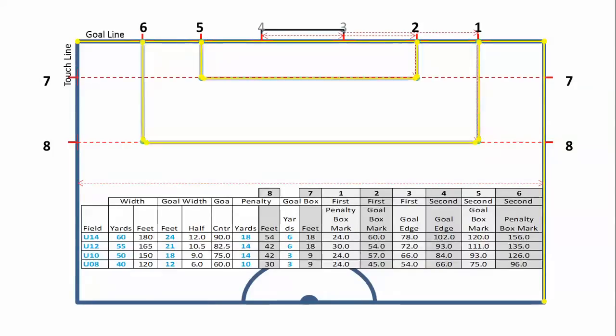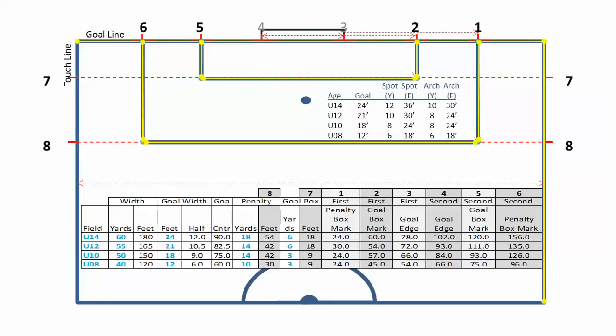Next, we'll put in the penalty spot and the arches. Your league or club should provide the dimensions. On our regulation size field, the spot is at 12 yards from the center of the goal. Also, measure out from each goal post to make sure it's the same distance. The spot will be used to measure the arch. To do this, put a stake in at the spot, measure out with your tape the required dimensions. With the paint can in hand, slowly walk around the arch and mark the line.